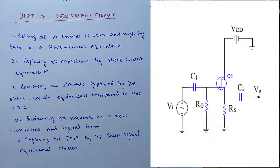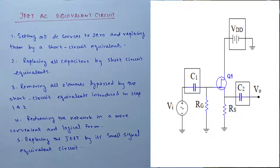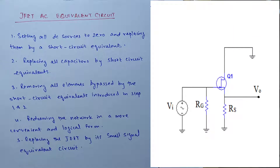The standard procedure is: DC sources go short circuit and capacitors go short circuit. After the removal of these elements, we are left with the basic JFET equivalent circuit to work with.